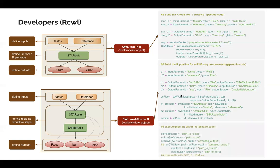The third step is to submit the CWL job. First, we assign values for the input parameters, and then we submit the job using execution functions such as RunCWL and RunCWLBatch, where we can submit jobs in parallel using high performance computing with different job schedulers such as SGE and SLURM.